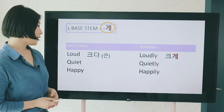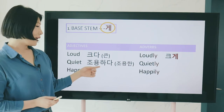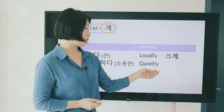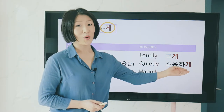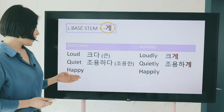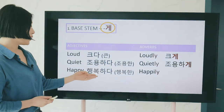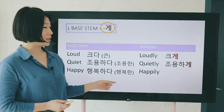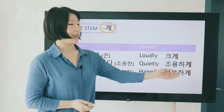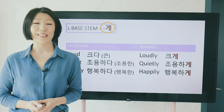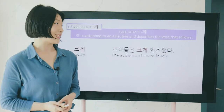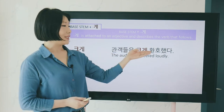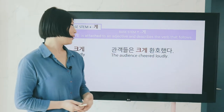So 크다 (loud) becomes 크게. 조용하다 (quiet) has the stem 조용하, so quietly is 조용하게. And 행복하다 (happy) has the stem 행복하, so happily is 행복하게.